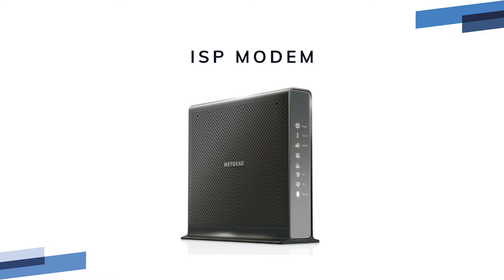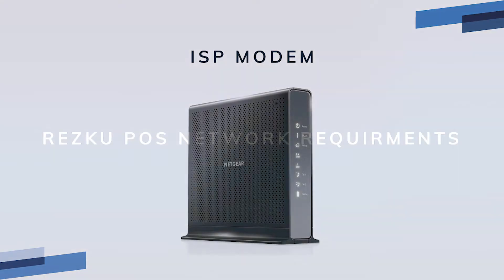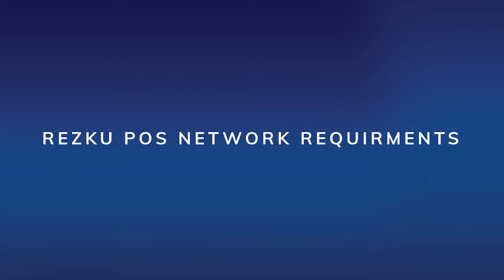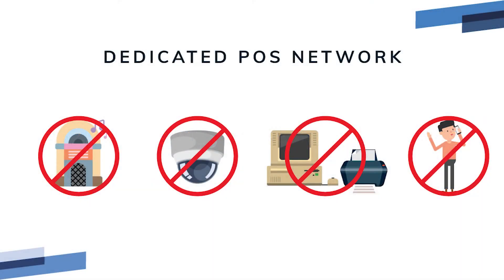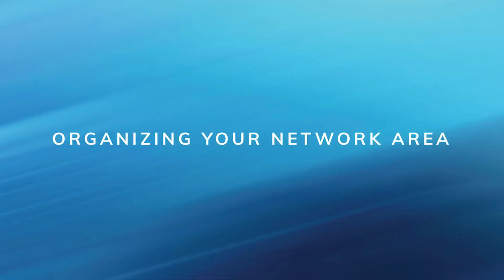Because of the sensitive nature of POS transaction data, for PCI compliance you must have a dedicated POS local area network that is not used by guests, staff, or any non-POS hardware — including but not limited to jukeboxes or music systems, security cameras and security systems, office or manager computers and printers, and employee laptops or cell phones.